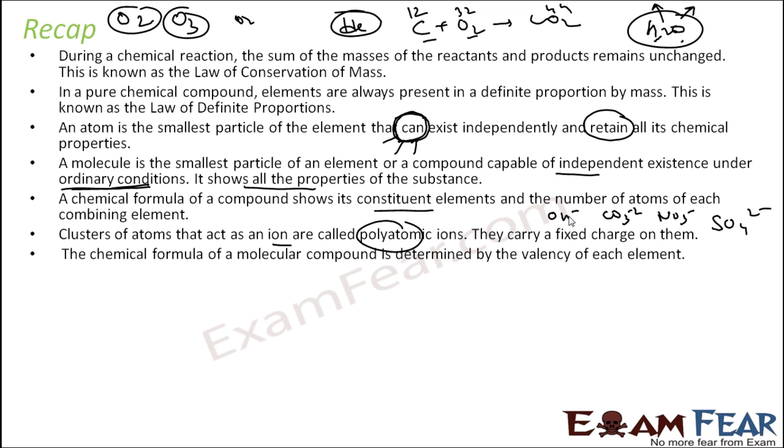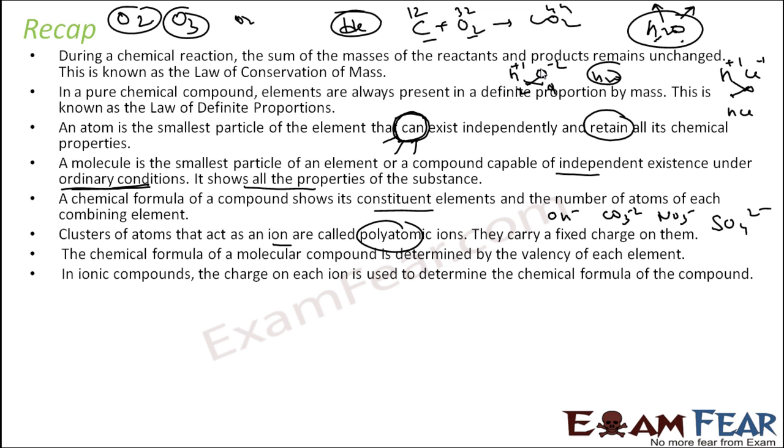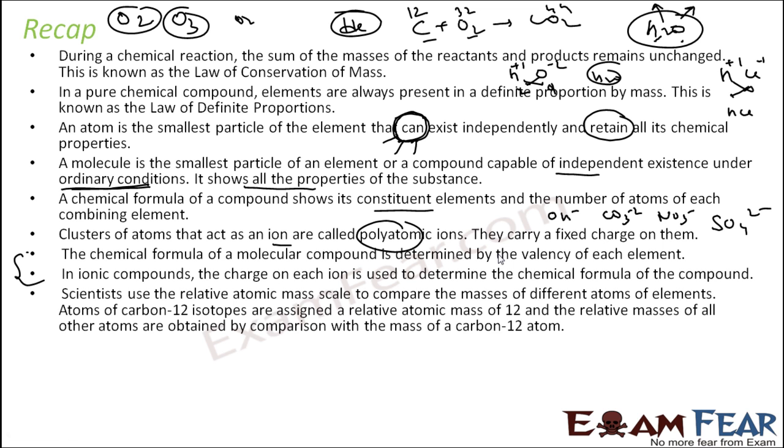The chemical formula of a molecular compound determines the valency. By valency we have seen that. For example, HCl plus 1 minus 1, you do a cross, you get HCl. Water, H plus 1 O minus 2, you do a cross, you get H2O. This is something we have seen. For ionic compounds, the charge on each ion is used to determine the chemical formula. For covalent compounds we use the valency. For ionic we use typically charge.